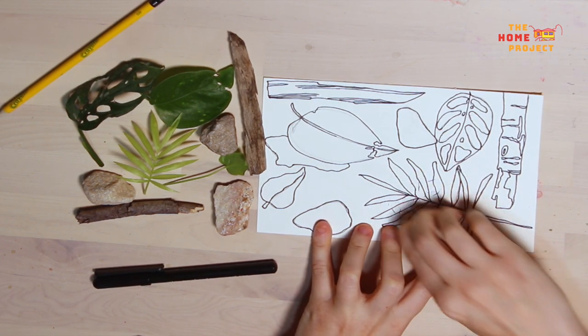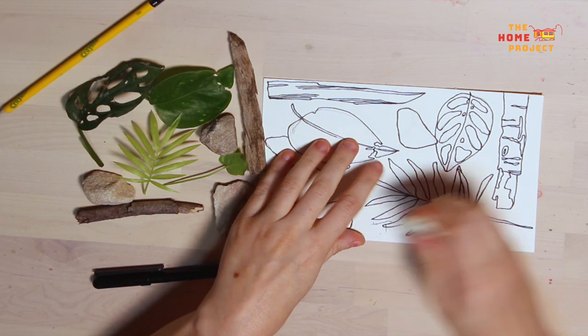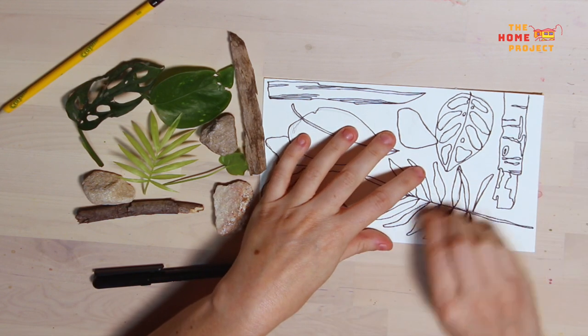Once the ink from my pen has dried I then use my rubber to remove any of the pencil marks that I don't want on my artwork.